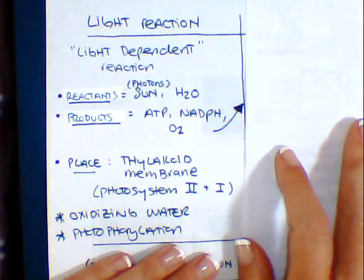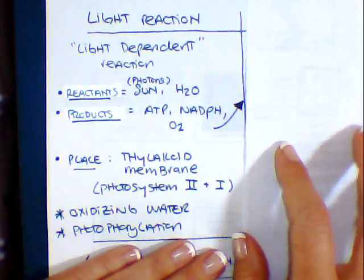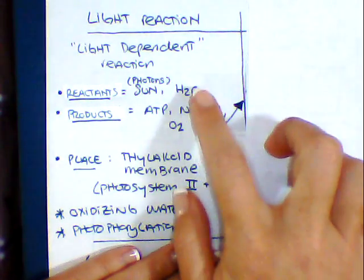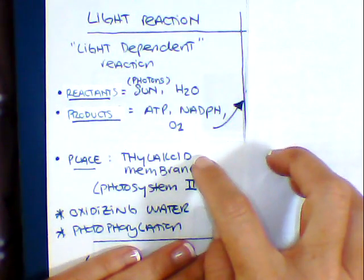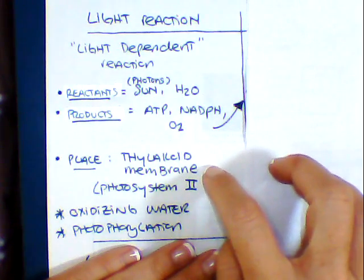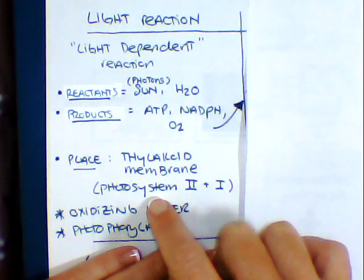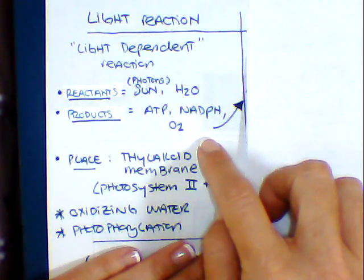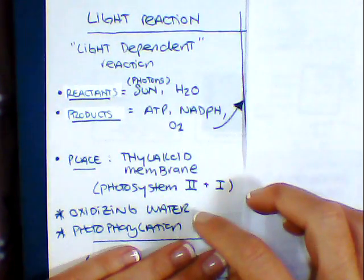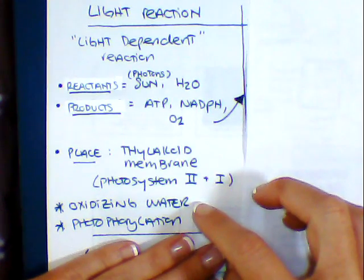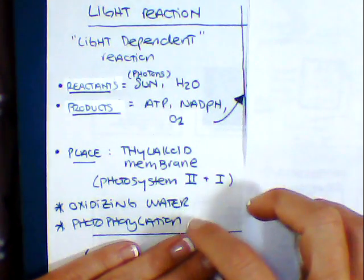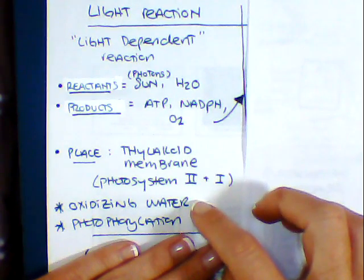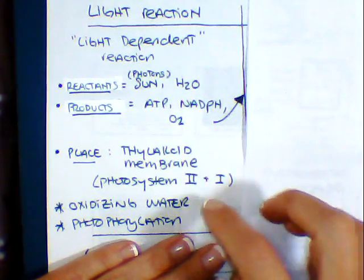Our products that we're going to get from the sale are our two energy molecules as well as some oxygen. Now, I want you to also add to your notes where everything's going to be taking place. So specifically, the light dependent reaction will take place in the thylakoid membrane itself. And we're going to go through what's known as Photosystem 2 and Photosystem 1 in order to make these products. We're going to be learning a little bit more today about this thing that's known as oxidizing and then photophosphorylation, which is actually the producing of those electrons and then the breaking apart of water into oxygen.